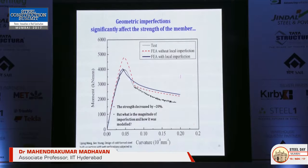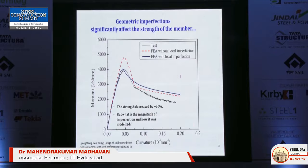How does it affect the load carrying capacity? The test result is shown in dark color. The dotted red line is finite element analysis without local imperfection. When you include imperfections, the actual values match the test strength. If you don't incorporate imperfections, there is a change in strength of 20%, giving you a fictitious load carrying capacity, which is incorrect. Because you cannot do testing for every structure, you have to do analysis — and in order to do that, you need to know what type of imperfections to give to your structure.